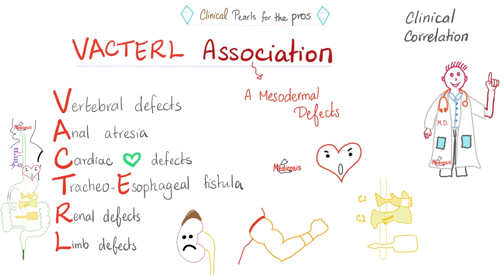Where is the chromosome? Where is the gene? It's not clear. What we do know is that this is a mesodermal defect. Vertebral — bone and cartilage come from Mesoderm. The wall of the anal canal? Mesoderm. Some cardiovascular structures? Mesoderm. The tracheal cartilage? Mesoderm. The kidney? Mesoderm. Bones, muscles, tendons? Also Mesoderm. Now it makes sense.